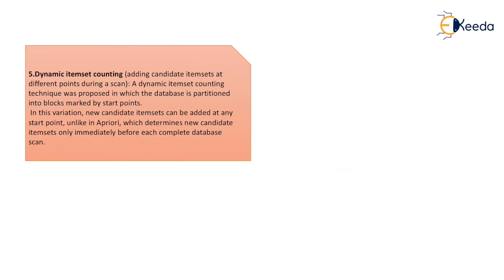The fifth technique is dynamic item set counting. In dynamic item set counting, a technique was proposed in which the database is partitioned into blocks marked by a starting point. In this variation, new candidate item sets can be added at any start point, unlike in Apriori, which determines new candidate item sets only immediately before each complete database scan.